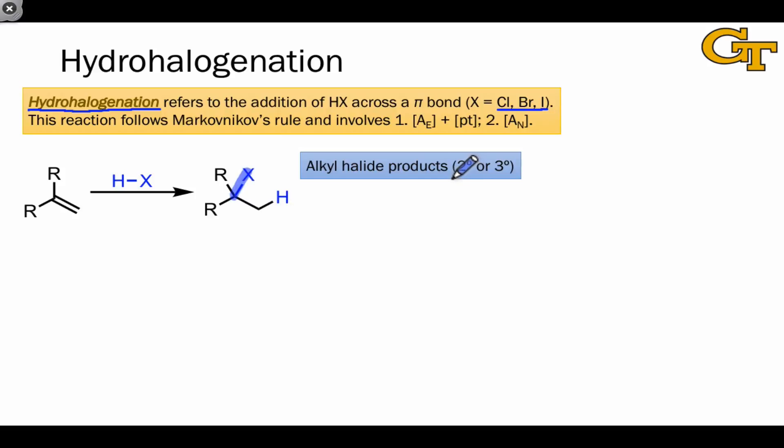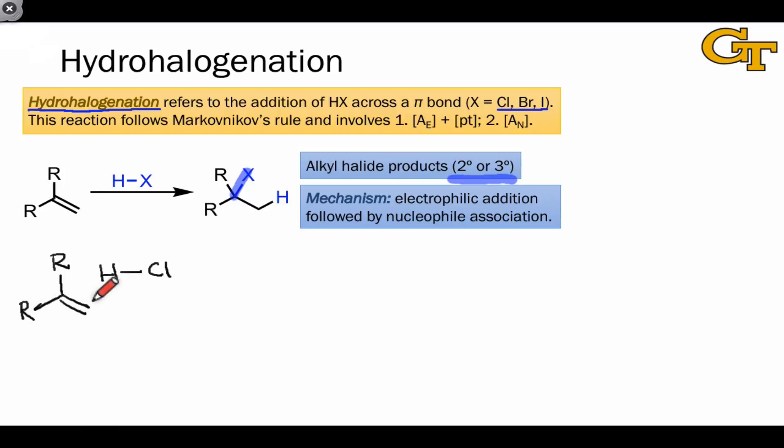The alkyl halides must be secondary or tertiary for mechanistic reasons that we'll see in a second. The mechanism here involves electrophile association, or A sub E, followed by nucleophile association. So the first step of the mechanism is our prototypical electrophilic addition step, in which the alkene coordinates to the electrophilic atom, here very clearly the hydrogen because of its partial positive charge, in the reagent. At the same time, the HX bond breaks.